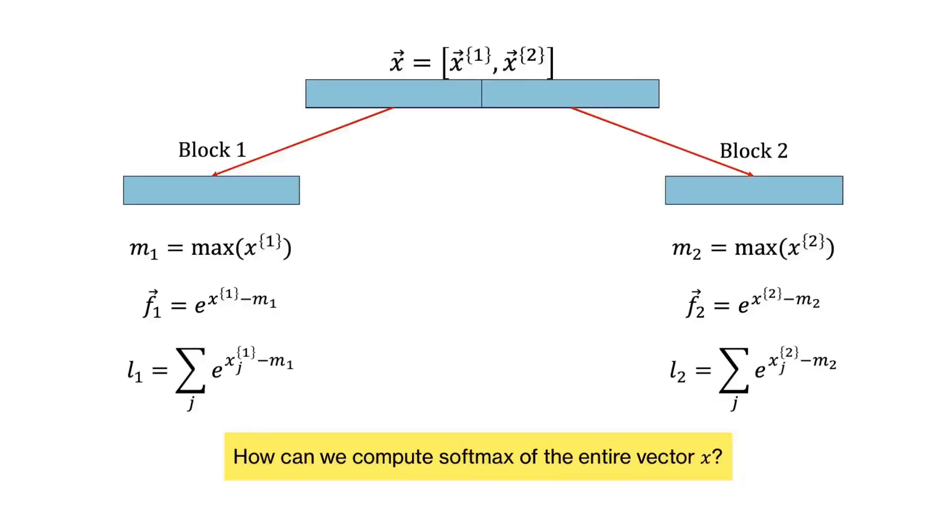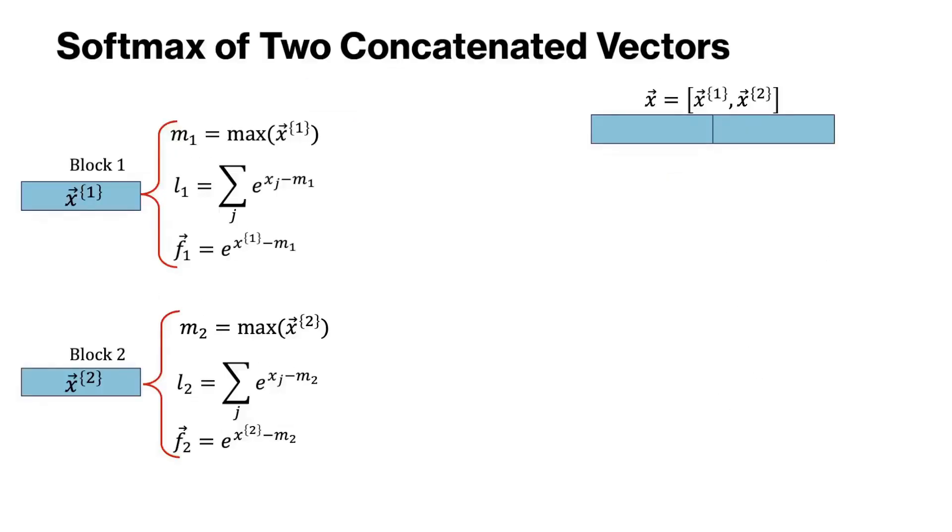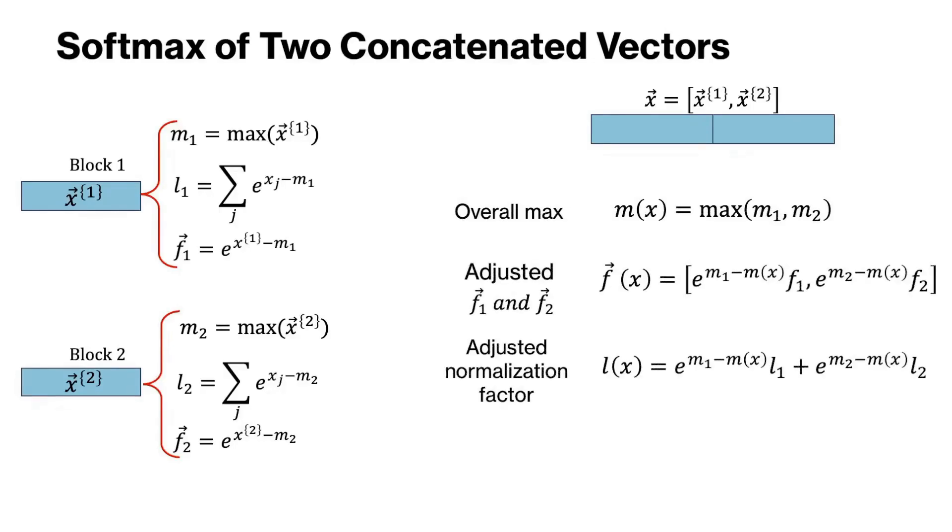Now the critical question is how can we compute softmax blockwise? Imagine we have vector x which is divided into two blocks, and for each block the maximum value, the vector f, and the normalization factor l are computed. To calculate softmax for the concatenated vector x, we first compute the overall max that is the max of m1 and m2, and then we adjust vectors f1 and f2 as well as the normalization factors according to the overall max value. Finally, softmax is calculated by the adjusted vector f of x divided by the adjusted normalization factor l of x.